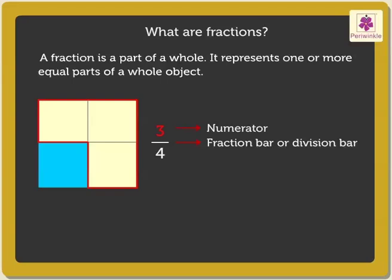It indicates the number of equal parts considered. The number below the fraction bar is called the denominator. It indicates the total number of equal parts the whole is divided into.